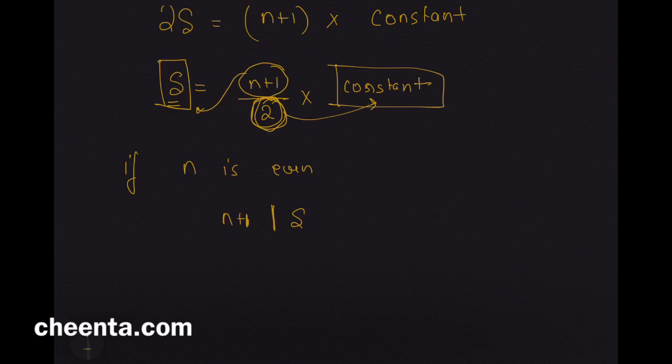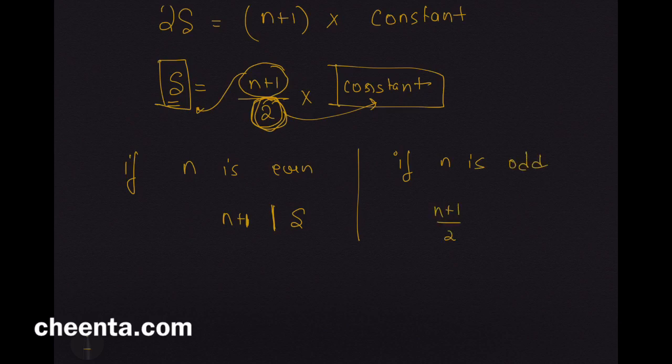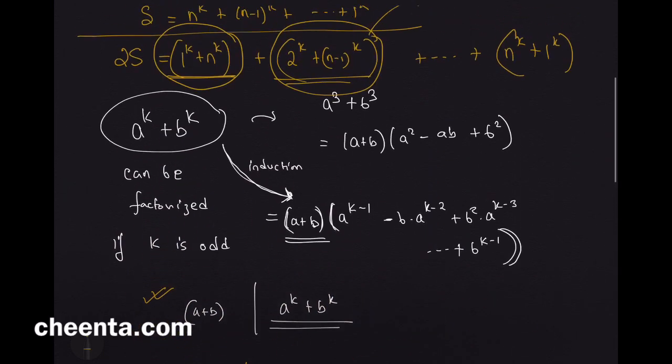If n is odd, if n is odd, then n plus 1 by 2 will surely divide S. We can just, if n is odd, then n plus 1 is even. So, we can divide by 2 and then that thing will divide S. So, this is the conclusion we get from the first part of our analysis.